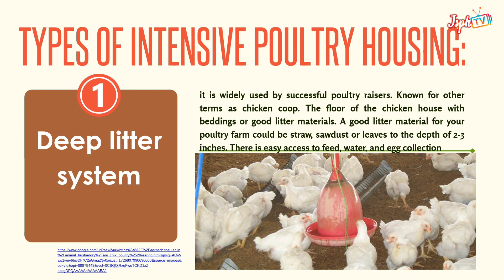The deep litter system is widely used by successful poultry raisers, also known as the chicken coop. The floor of the chicken house is covered with beddings or good litter materials. A good litter material for your poultry farm could be dried sawdust or leaves, to a depth of two to three inches. There is easy access to feed, water, and egg collection.